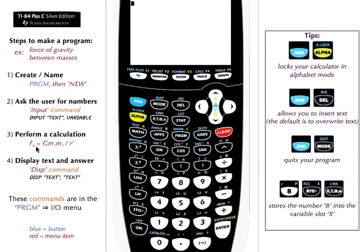We're going to make a program that solves for the gravity force between two masses. This requires three variables: mass 1, mass 2, and the distance the two masses are apart.